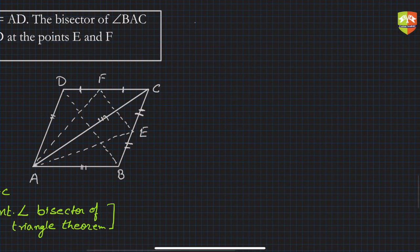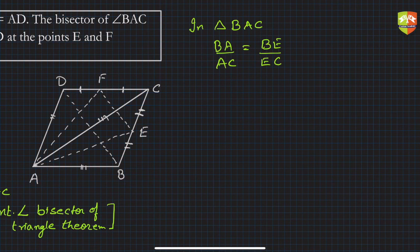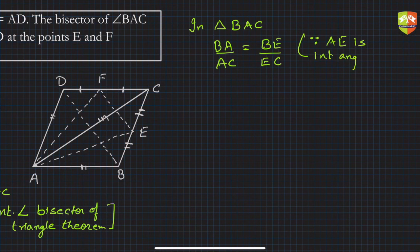In triangle BAC, since AE bisects angle BAC, by the Internal Angle Bisector Theorem we get: BA upon AC is equal to BE upon EC. Let this be equation (2).